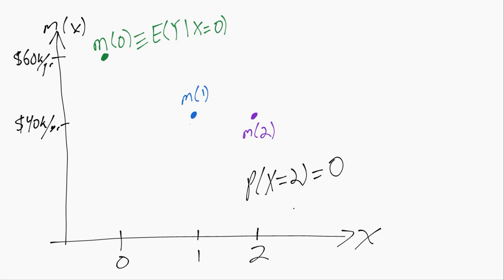In that case, we're left with two points and we can actually draw a straight line through them. That will be the best linear approximation and will actually equal the true CMF at two of the points, but not at this third point because we don't observe anybody there.